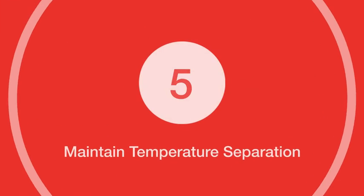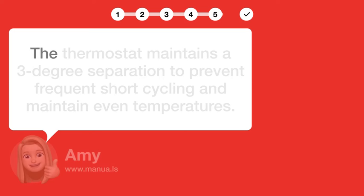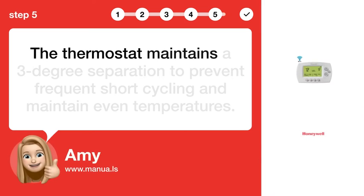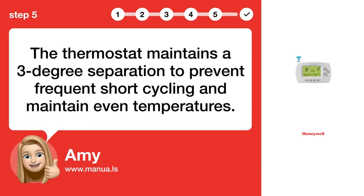Step 5: Maintain temperature separation. The thermostat maintains a 3-degree separation to prevent frequent short cycling and maintain even temperatures.